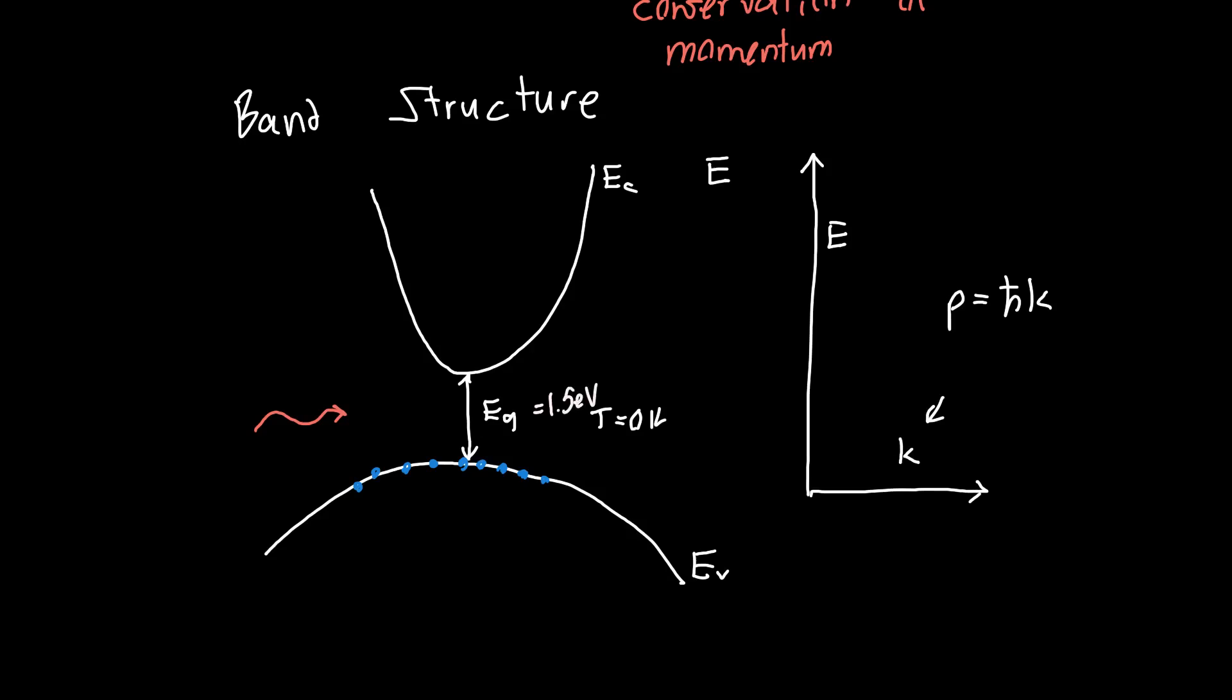And this photon had an energy of 2 electron volts. Then if we were to try and figure out, okay well what happens if this electron near the very top of the valence band absorbs the photon, where would this electron end up in the conduction band? The answer will require us to figure out how much momentum k is contributed by a photon.